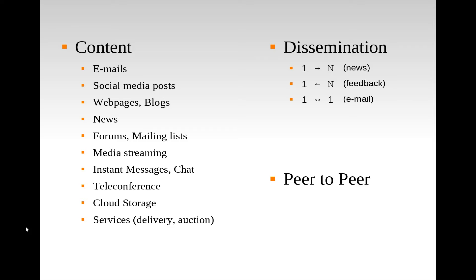An email exchange follows the one-to-one pattern, and a public forum with many people communicating will follow a many-to-many dissemination pattern. It's also possible to have a single producer and consumer for the same information, such as for backup of files. Our idea with FreeChains is to offer these communication patterns using the same protocol, the same set of commands and APIs.